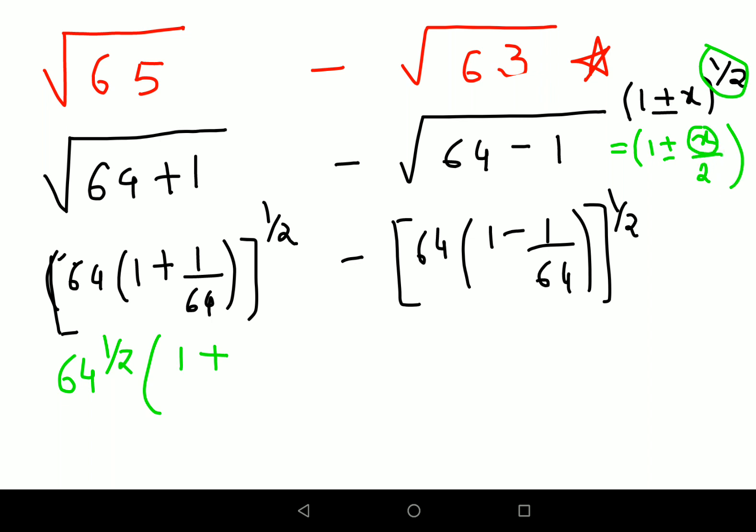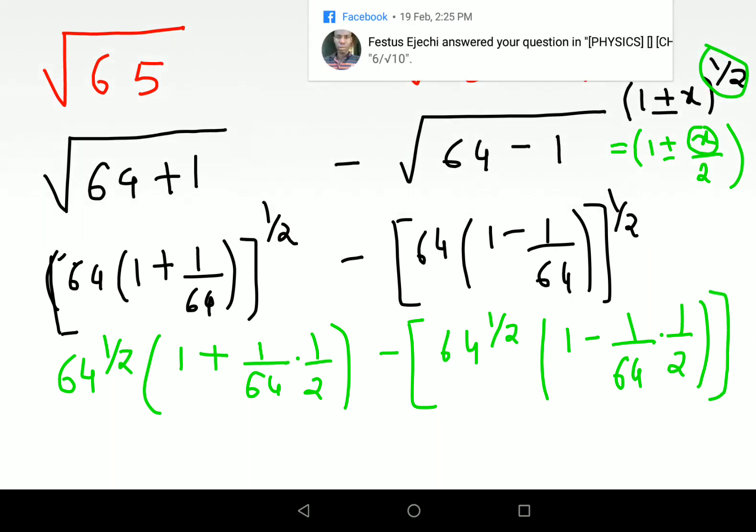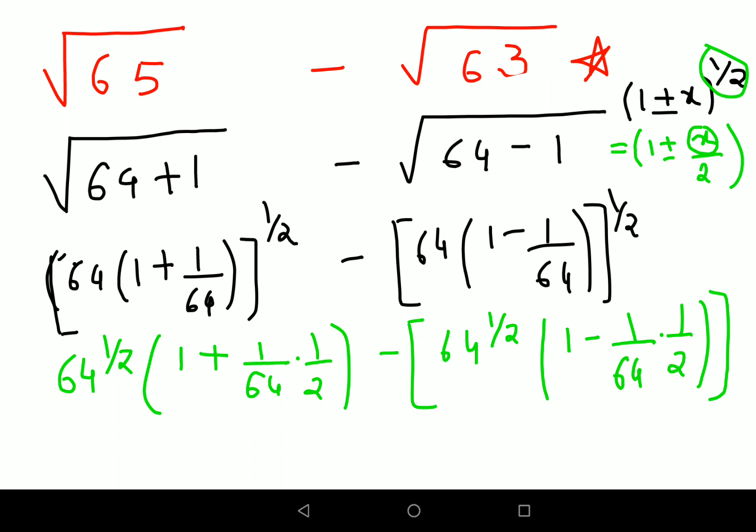Going back here, I can write 64 raised to 1/2, then 1 plus - this x gets multiplied with the index 1/2 - so I will get 1/64 multiplied by 1/2, minus 64 raised to 1/2 times (1 minus 1/64 multiplied by 1/2).